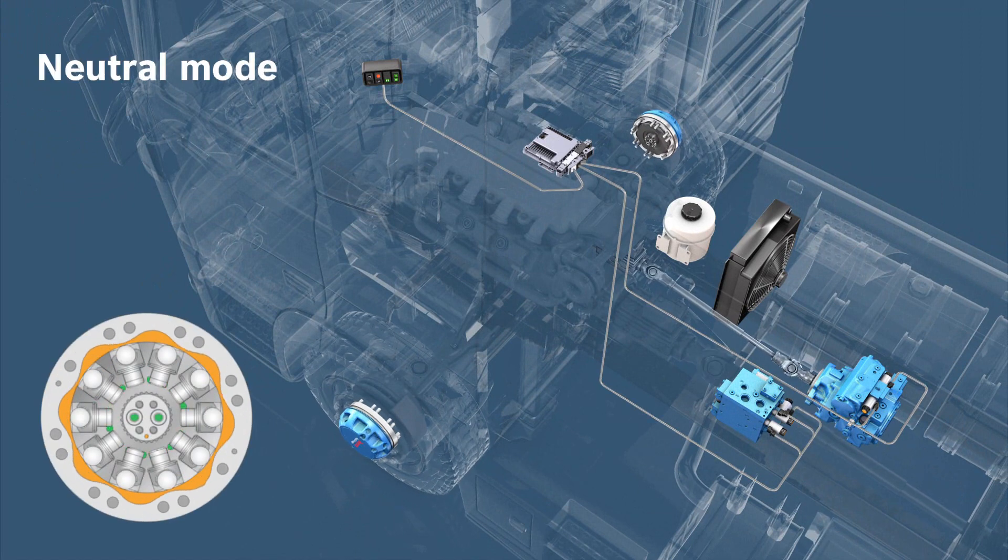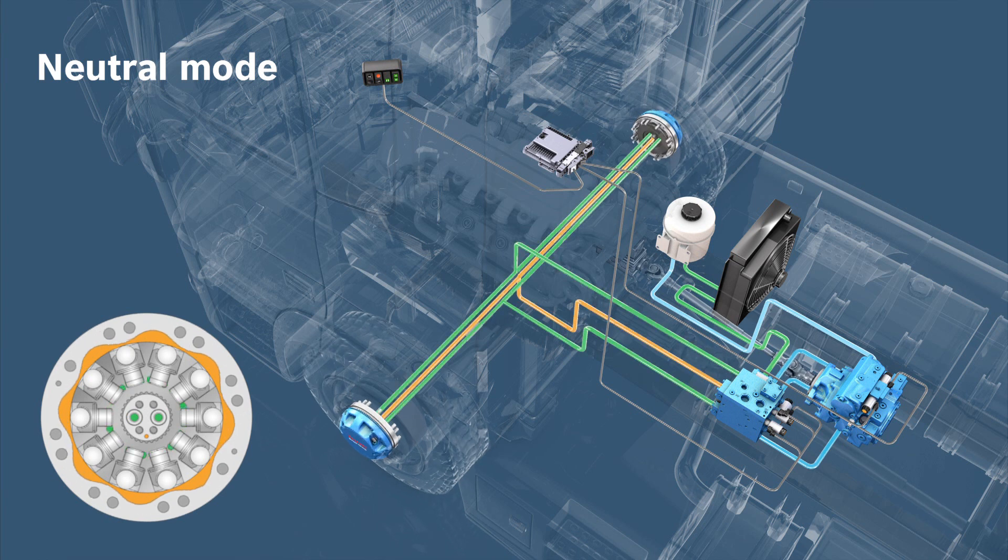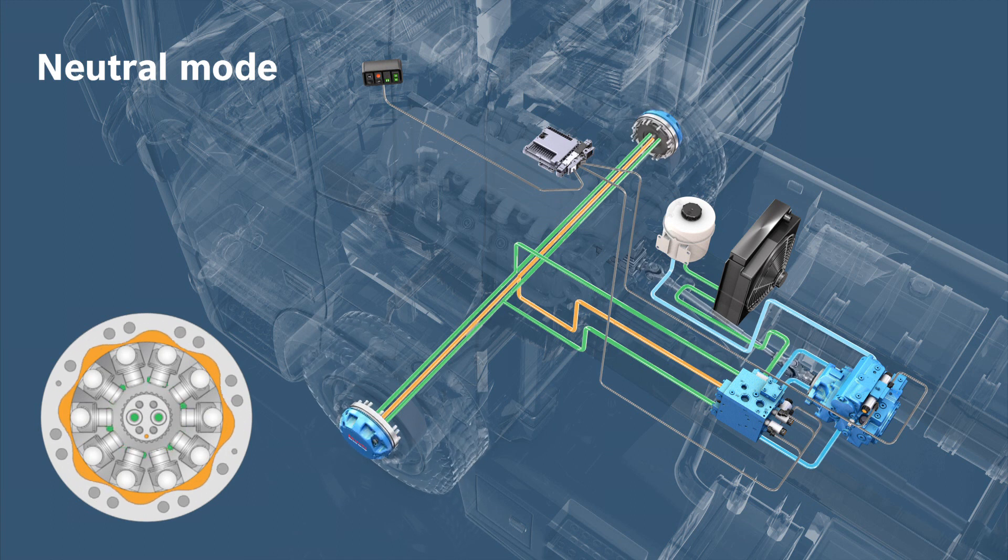In neutral mode, HTA is not active. The drag losses on the front axle are therefore reduced to a minimum, which significantly reduces fuel consumption compared with a mechanical all-wheel drive.